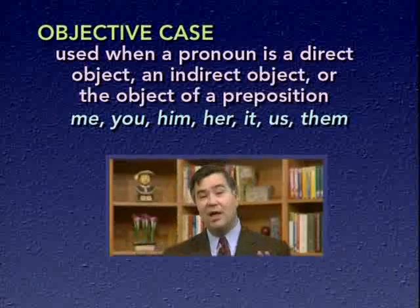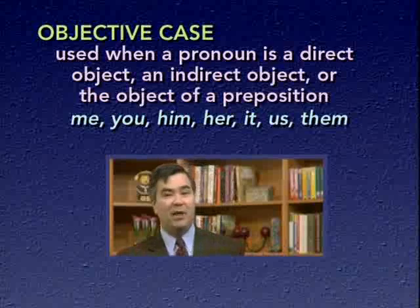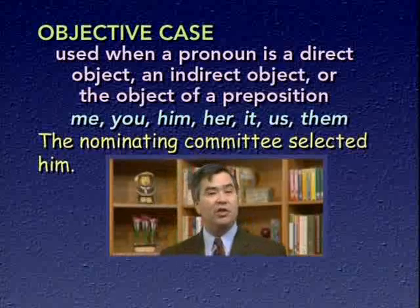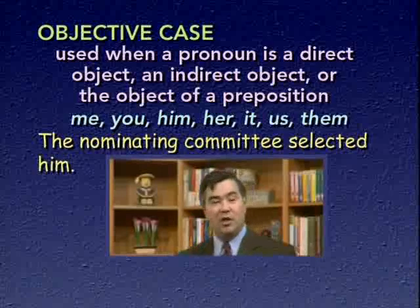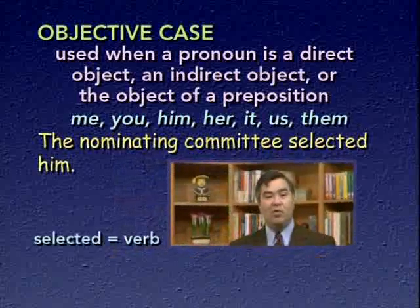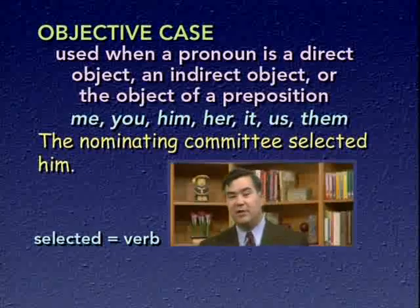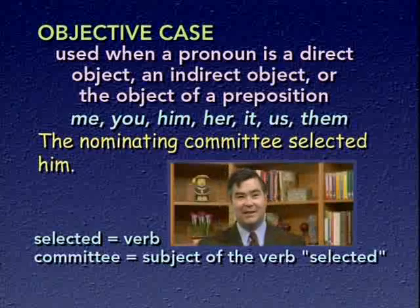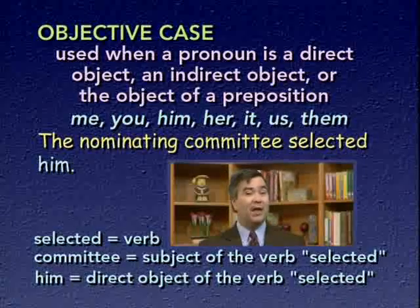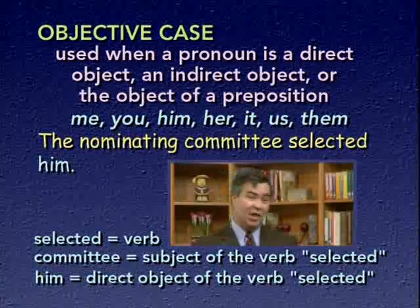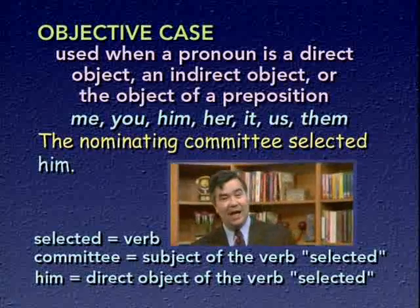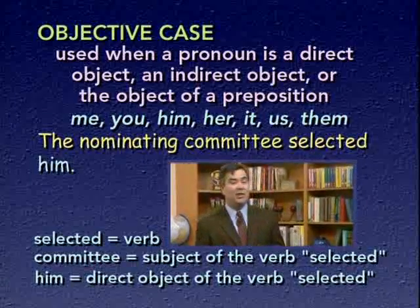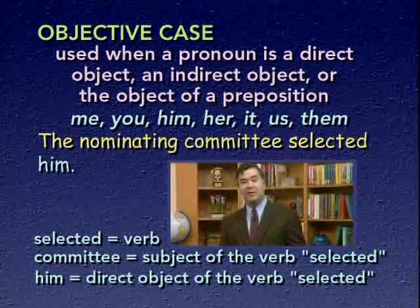Let's look at sentences illustrating each of the three uses of objective case pronouns. First: 'The nominating committee selected him.' The verb is selected; the subject is the nominating committee. Him is the direct object — it receives the action of the selecting. Since it's a pronoun used as a direct object, it should be in the objective case, as it is: him.